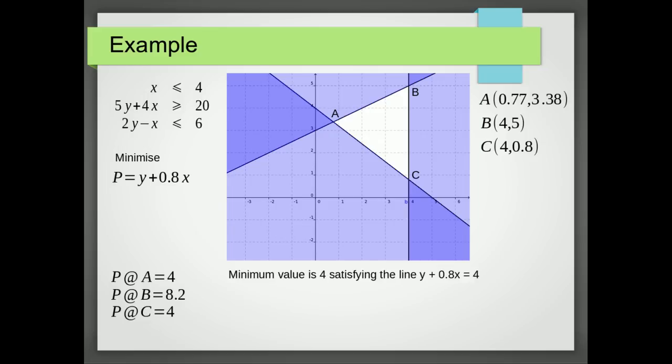So that means there's a minimum value of 4, but it's got to satisfy the line y plus 0.8x equals 4. And also the x value needs to be between 0.77 and 4. You could have equally said the y value needs to be between 0.8 and 3.38. It doesn't matter which one you choose. So if we want to find a point that satisfies that, we just find an x value, in this case 3, substitute it into our equation, and we get a y value of 1.6.